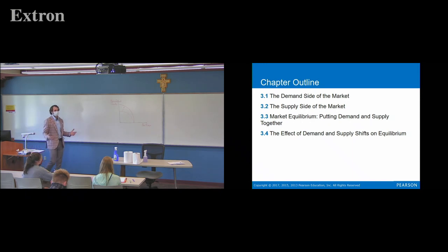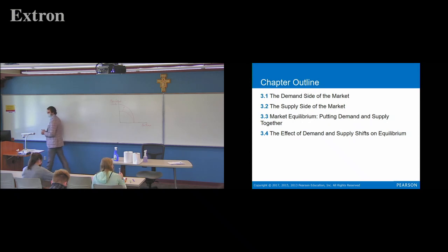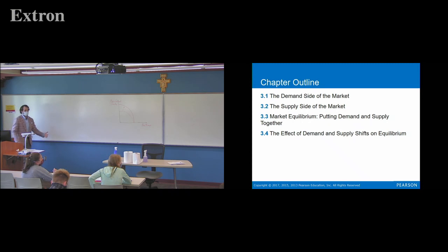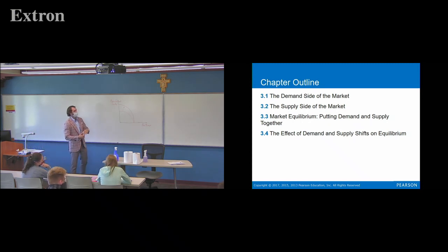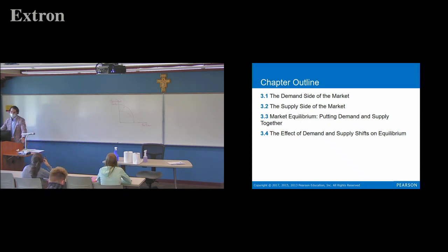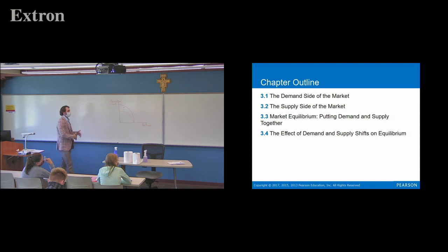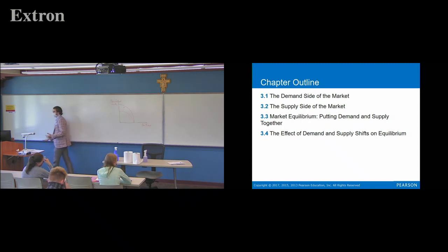We'll look at the demand side of the market — how consumers decide how much they want to buy and how they're affected by price. Next we'll look at the supply side, how firms decide what goods they want to bring to market and how price determines quantity they'll supply. Then we'll put supply and demand together into a market to see what the equilibrium price will be and how the invisible hand encourages buyers and sellers to reach the same amount.